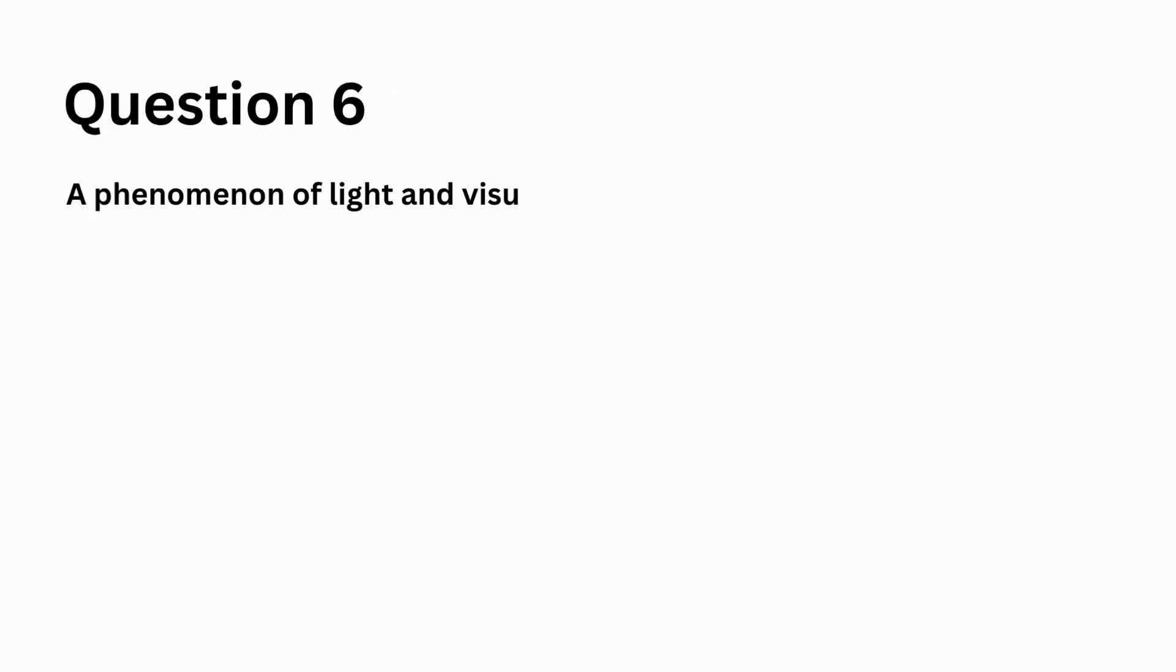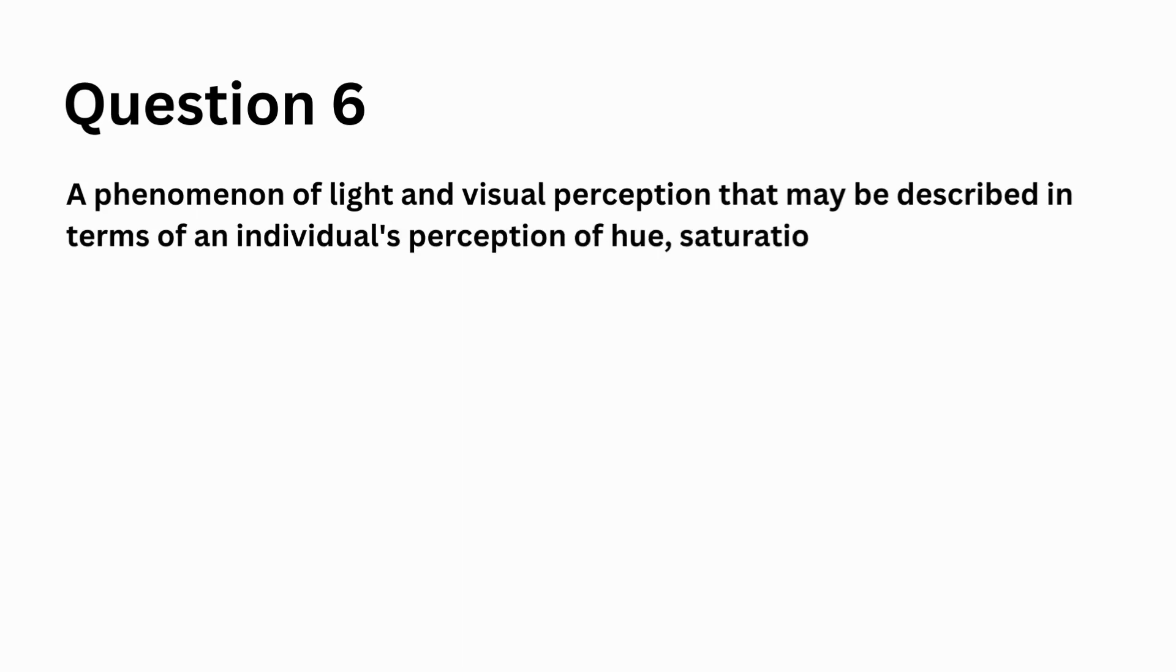A phenomenon of light and visual perception that may be described in terms of an individual's perception of hue, saturation, and tonal value. A. visual acuity, B. visual inertia, C. color, D. texture.